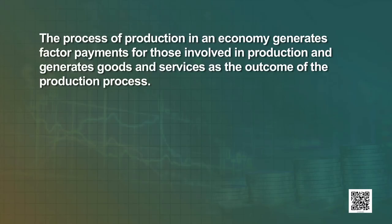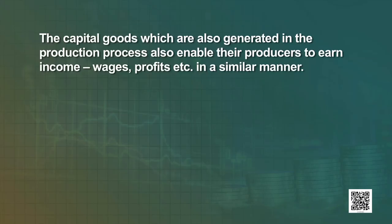In turn, the public's demand for goods and services creates payments to the firms and enables the sale of products they produce. The process of production in an economy generates factor payments for those involved in production and generates goods and services as the outcome. The incomes so generated create the capacity to purchase the final consumption goods and thus enable their sale by the business enterprises. The capital goods, which are also generated in the production process, enable their producers to earn income — wages, profits, etc. — in a similar manner. The capital goods add to or maintain the capital stock of an economy and thus make production of other commodities possible.